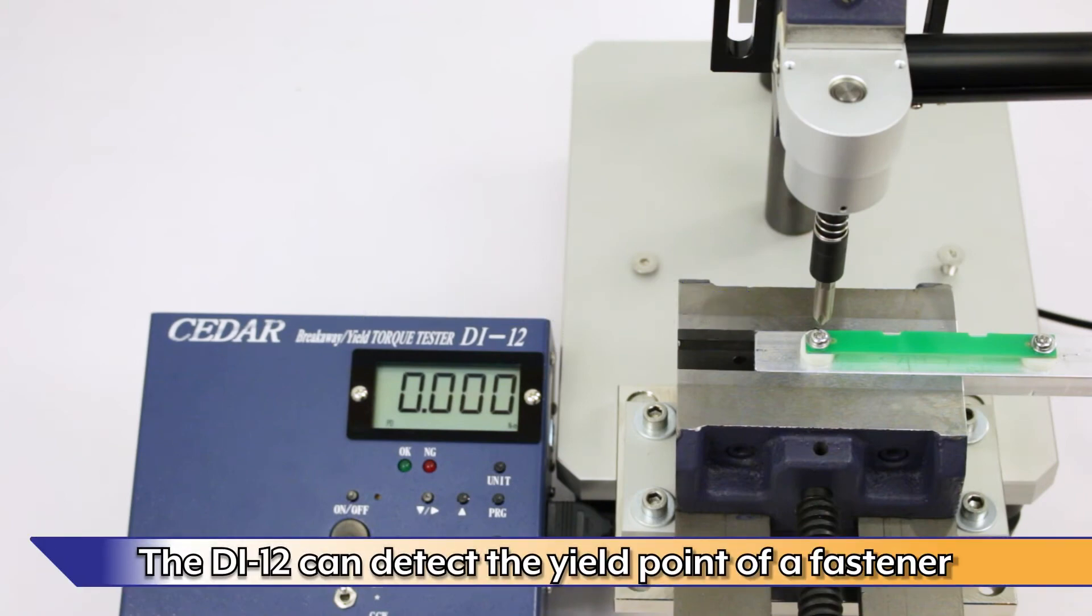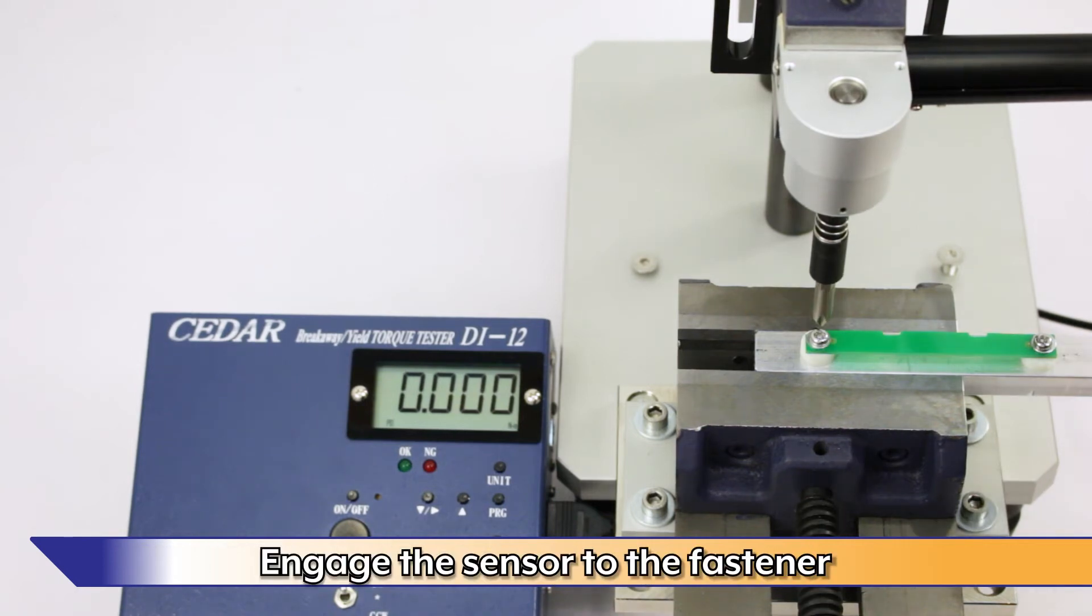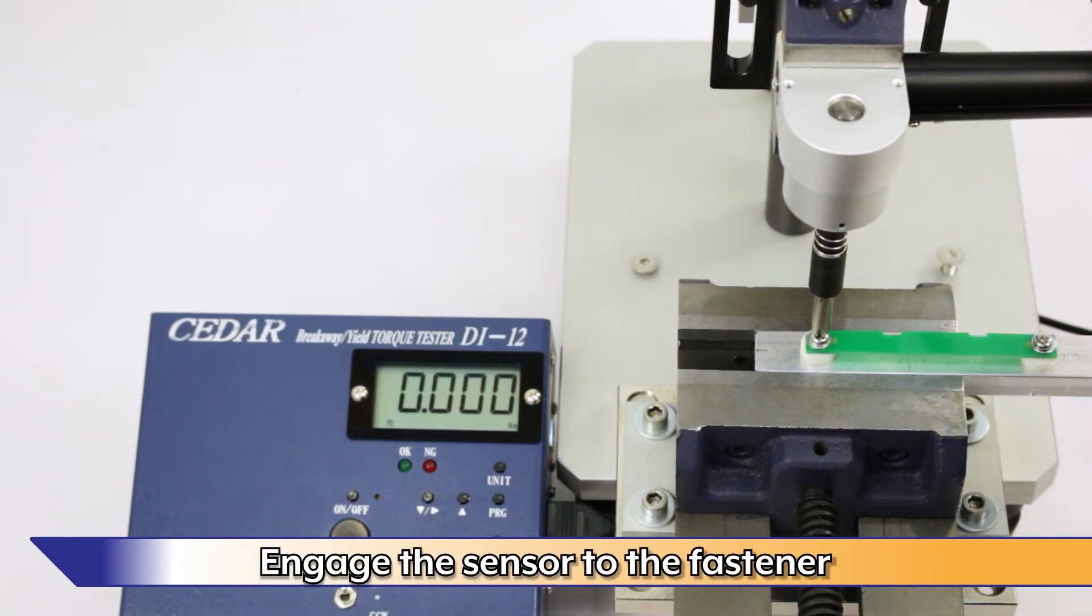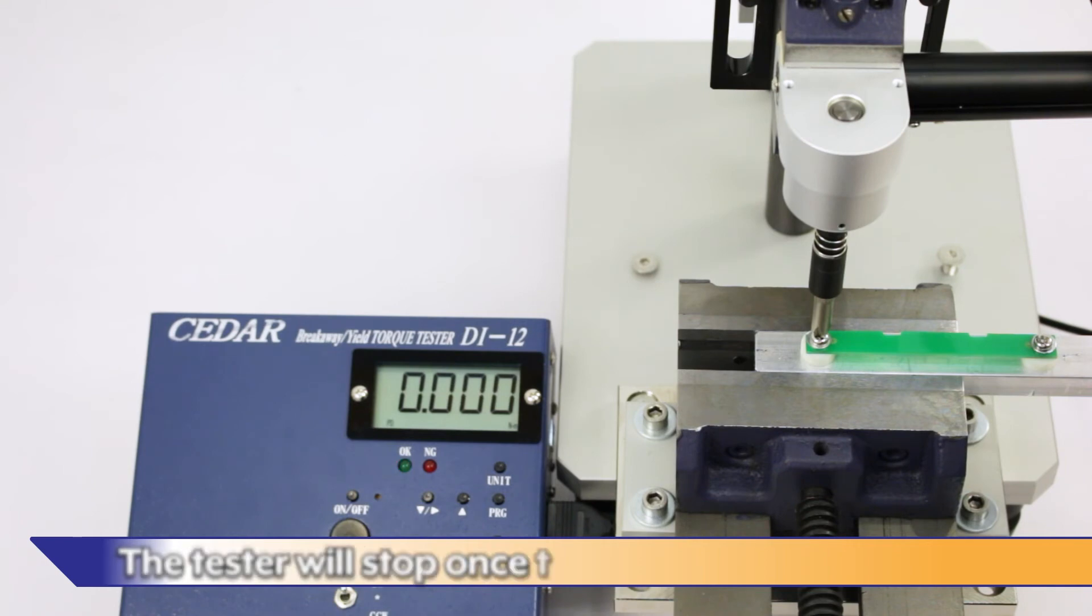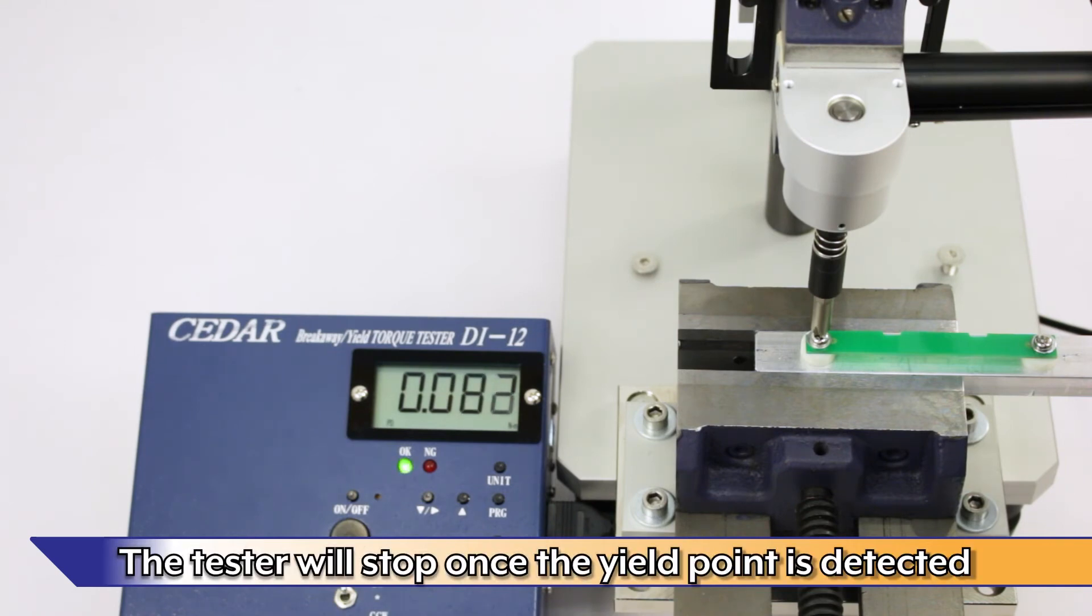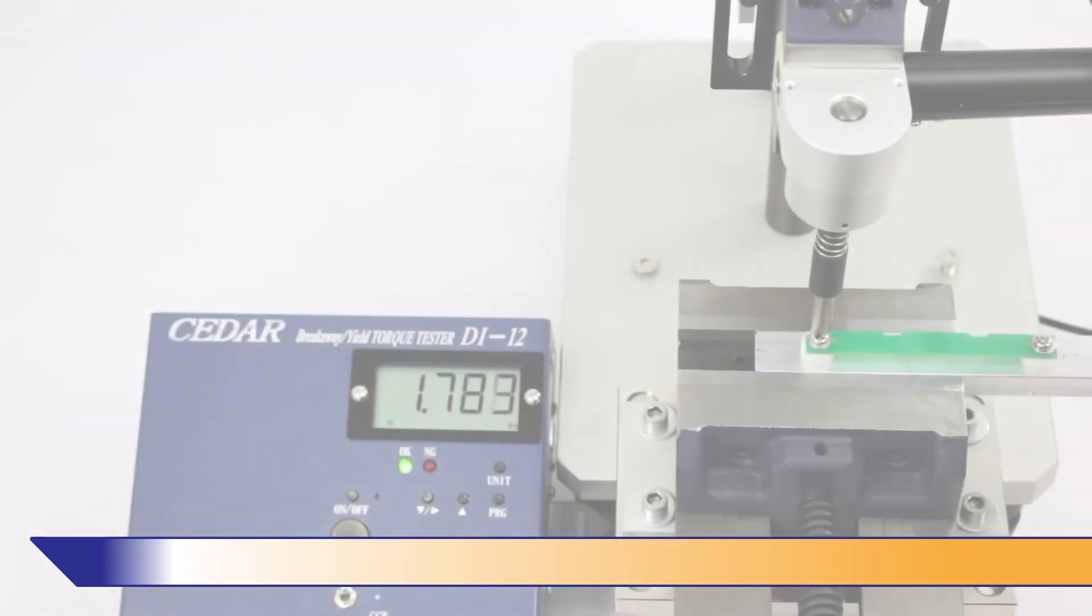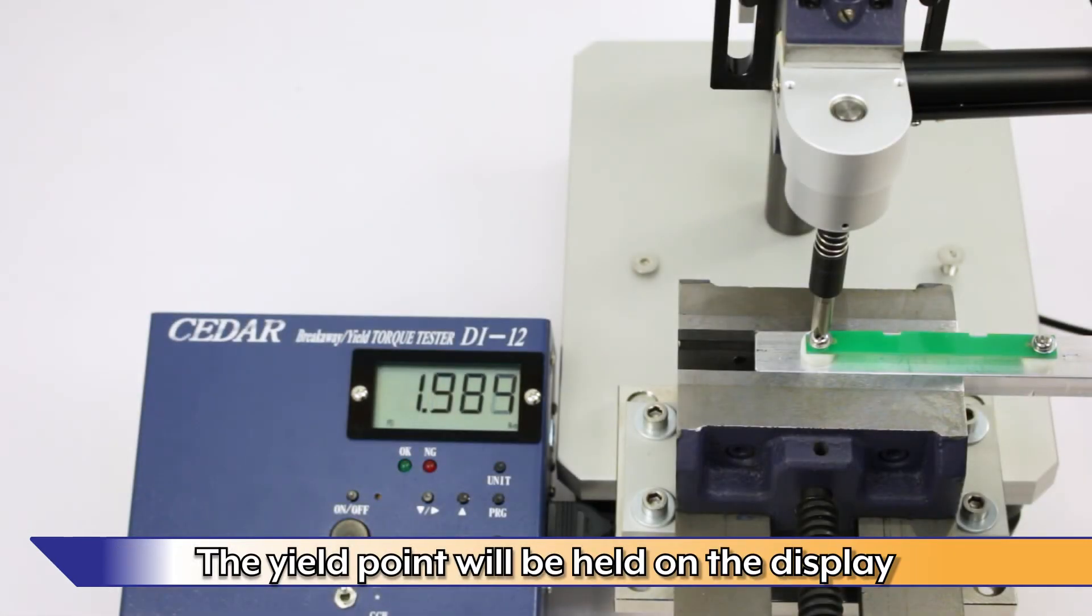The DI-12 can automatically detect the yield point of a fastener. Engage the sensor to the fastener. Press the Start-Stop button to begin the test. The tester will stop once the yield point is detected. The yield point will be held on the display.